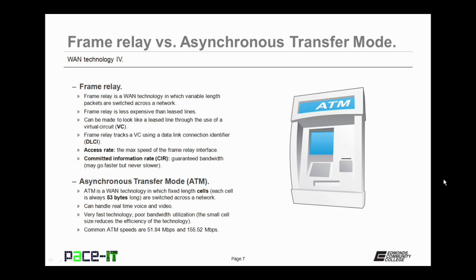Now let's talk about the differences between frame relay and asynchronous transfer mode. Frame relay is a WAN technology in which variable-length packets are switched across the network. Frame relay is less expensive than leased lines, but it can be made to look like a leased line through virtual circuits or VCs. A frame relay network will track a VC using a data link connection identifier to identify the ends of the VC.